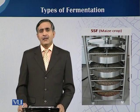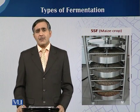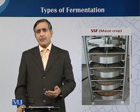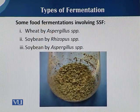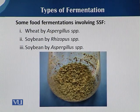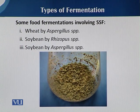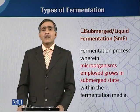You can see here that solid state fermentation happens in tray fermenters. As already mentioned, solid state fermentation is mostly involved in food fermentation — for example, wheat fermented by Aspergillus species, soya bean by Rhizopus species, and soya bean also by Aspergillus species. In this diagram you can see how solid state fermentation looks.